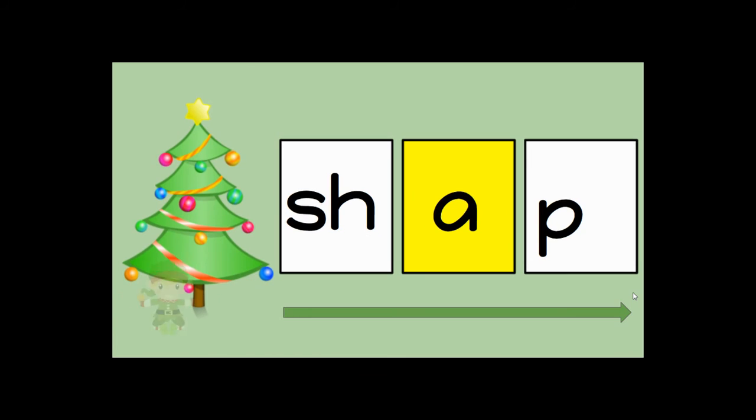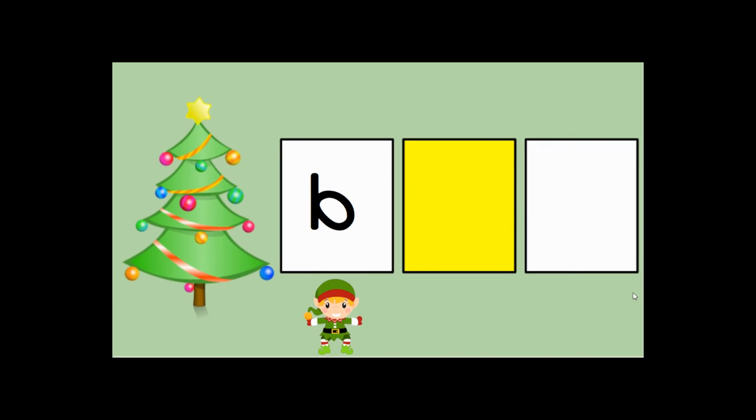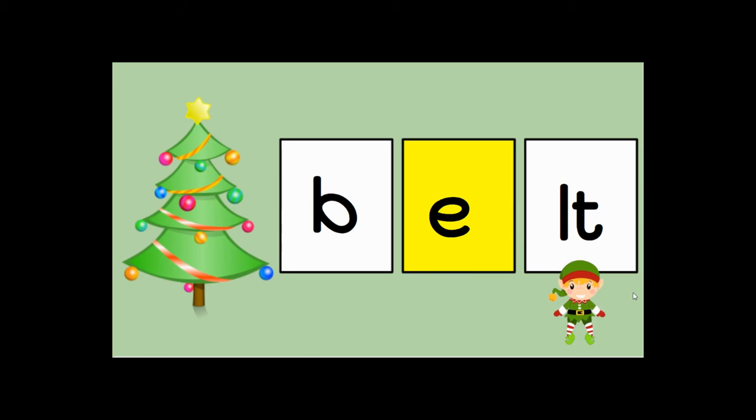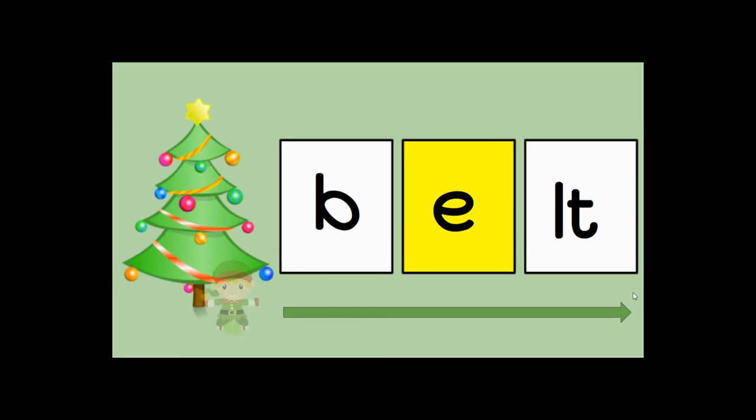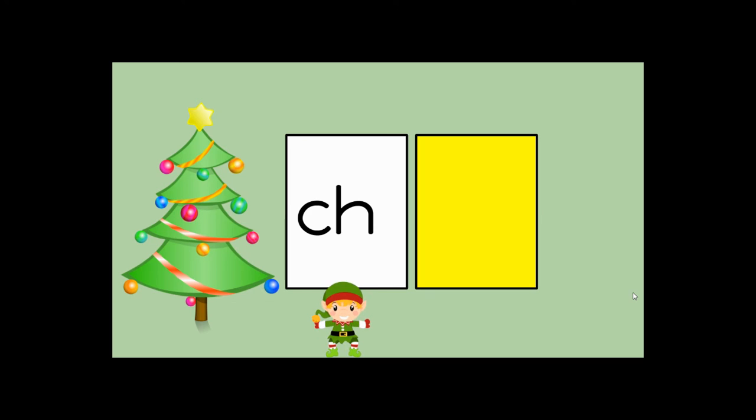sh. Now remember it's left open. a ch b l e blee cr cr i sp crisp. That's a real word. p p a n pond.